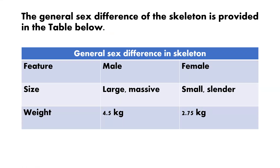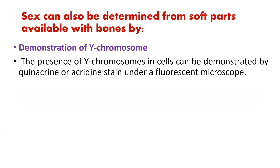The general sex difference of the skeleton is provided in the table below. In terms of size, male bones are large and massive, while female bones are small and slender. Regarding weight, in males it is approximately 4.5 kg, and in females it is 2.75 kg. These differences are important for sex determination.